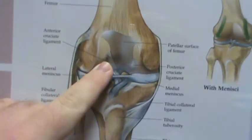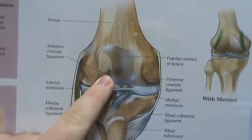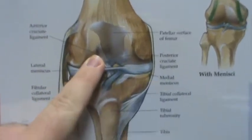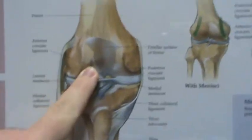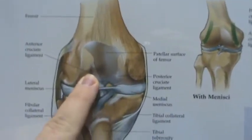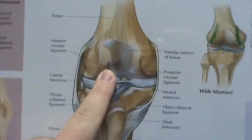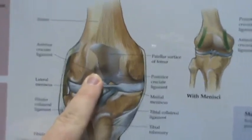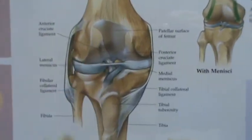Right there is the anterior cruciate ligament. That's the most common knee injury, unfortunately, in the NFL.